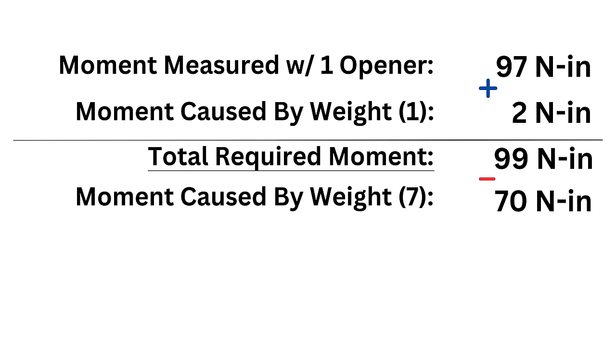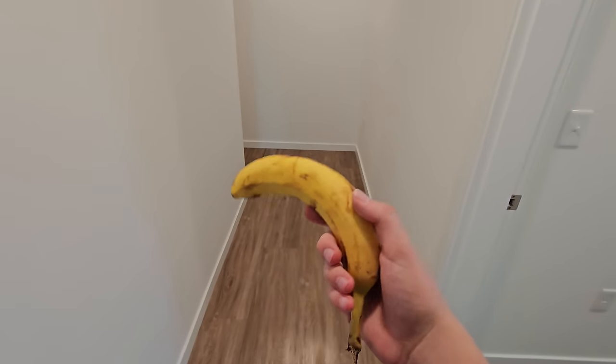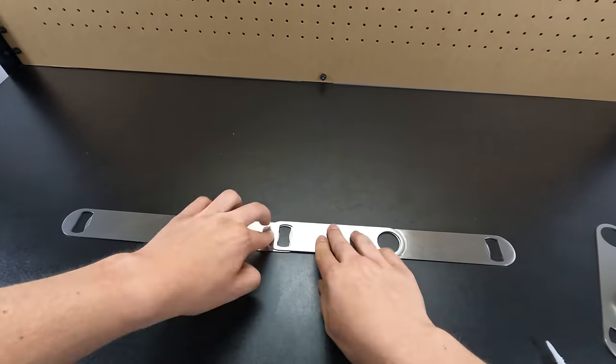Subtracting this moment from the required moment measured earlier, and you'll find that you only need an additional moment of 29 newton inches to open the bottle, which by my calculations means that a single banana should be plenty of weight to open the bottle. That's the theory, but let's look at it in practice.